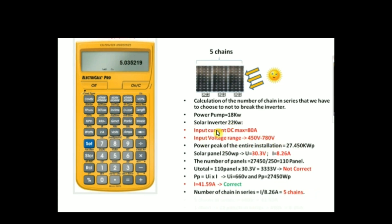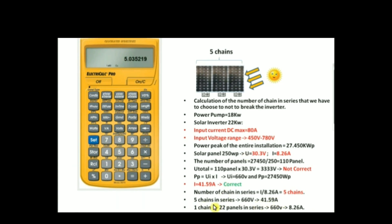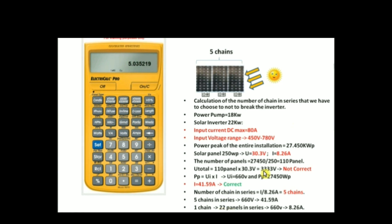In the end, we have five chains in series delivering 660 volts and 41.52 amps in total. Each chain contains 22 panels in series and delivers 660 volts and 8.26 amps. This is how we feed our pump without breaking the inverter. Thank you for your attention and see you in the next tutorial.